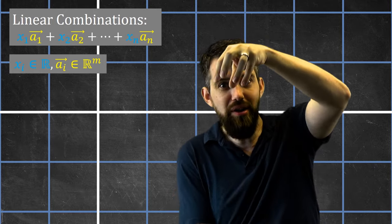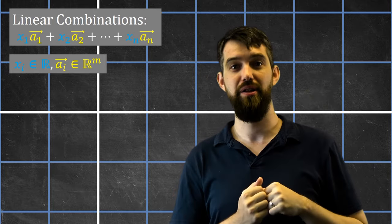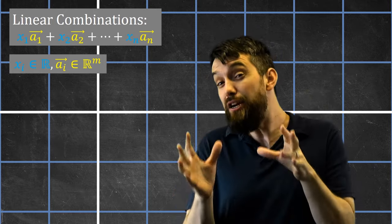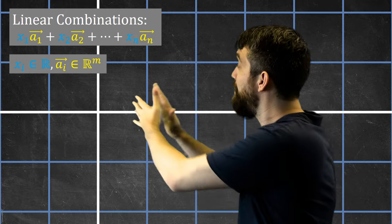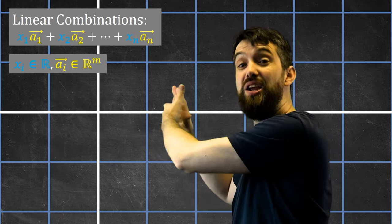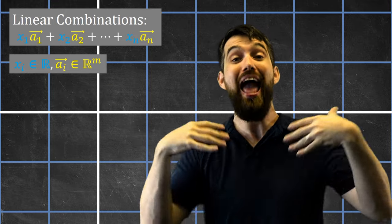Note that the number of components of each vector — m — is different from the number of vectors n that I'm adding up.